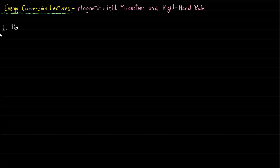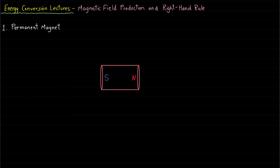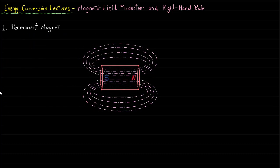The first method of producing the magnetic field is by using a permanent magnet. The permanent magnet produces the magnetic field without external excitation current. The permanent magnet has a north pole and south pole. The magnetic field lines of the permanent magnet emerge from the north pole and enter the south pole, forming a continuous closed loop.